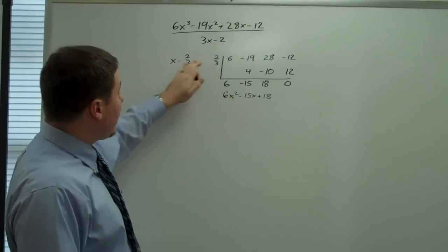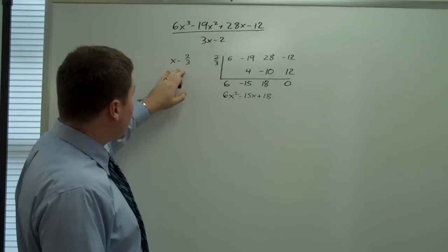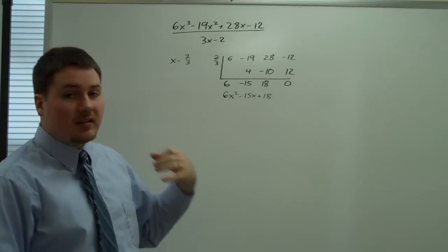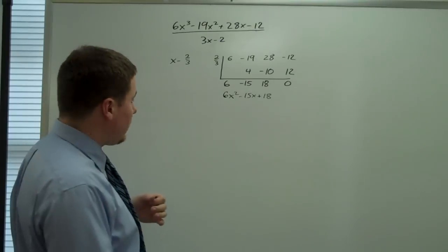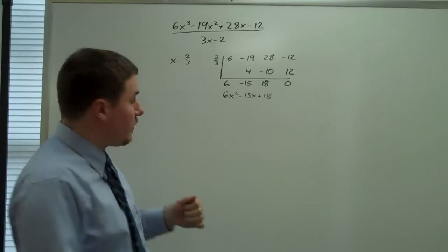Basically what happens is by converting it from 3x minus 2 to x minus 2 thirds, we factored out a 3 from the quotient. Or actually we included a factor of 3 in the quotient.